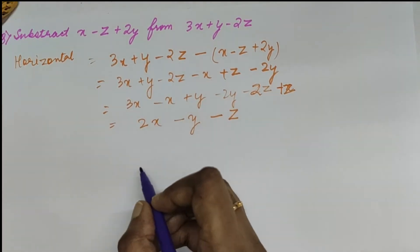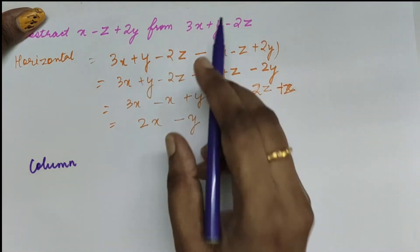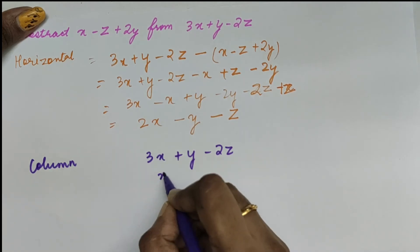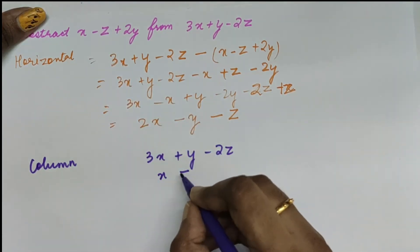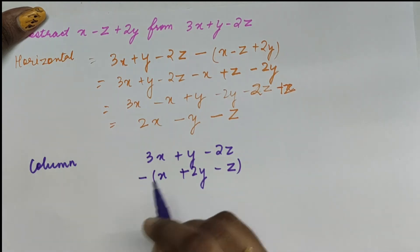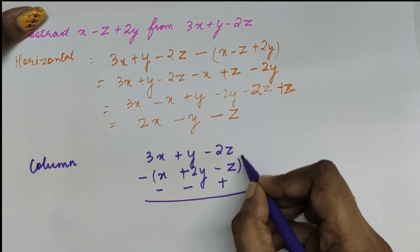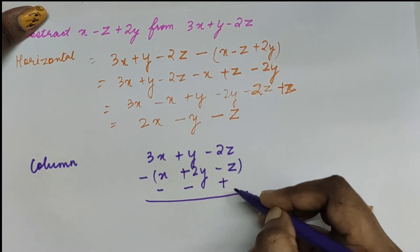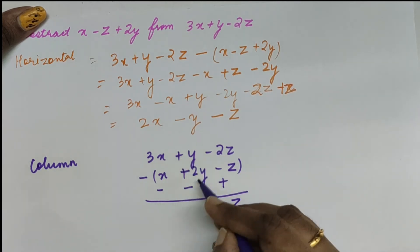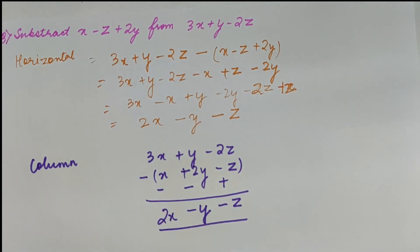Now the same question in the column method. As it is the 'from' part, it is written on top first. We place the like terms of the second expression underneath and put a negative sign. By putting a negative sign, remember: positive becomes negative and negative becomes positive. Then we add the terms based on the sign change. So z minus 2z plus z becomes minus z; y minus 2y becomes minus y; and 3x minus x equals 2x.